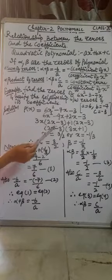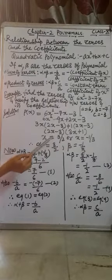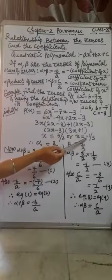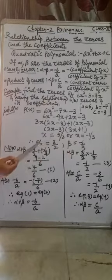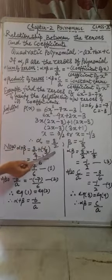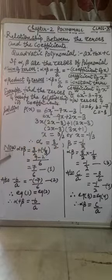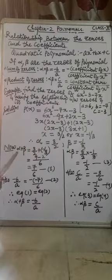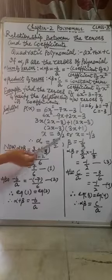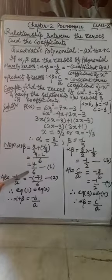Comparing the brackets with zero, we get x equals 3 upon 2 and x equals minus 1 upon 3. These are our two required zeros. So let alpha equals 3 upon 2 and beta equals minus 1 upon 3. Now we will find the sum of the zeros, that is alpha plus beta. Putting in the values and taking the LCM, we get 7 upon 6.